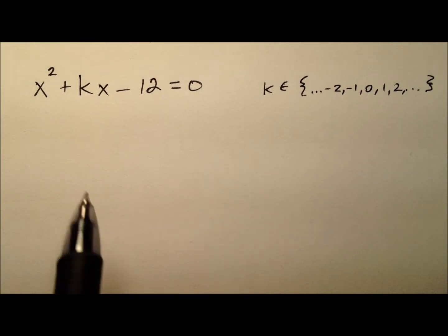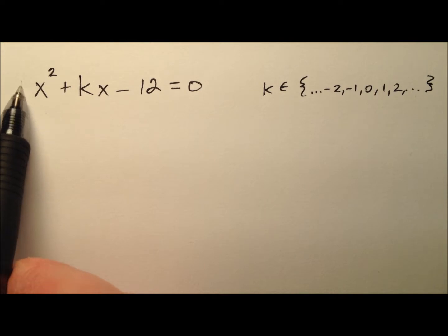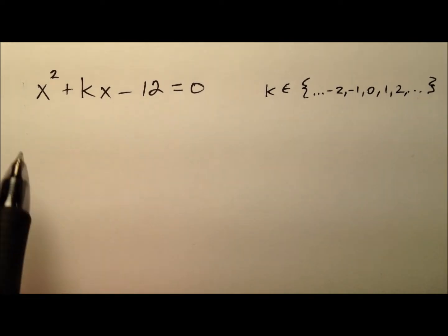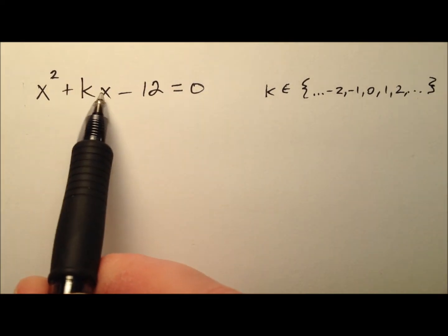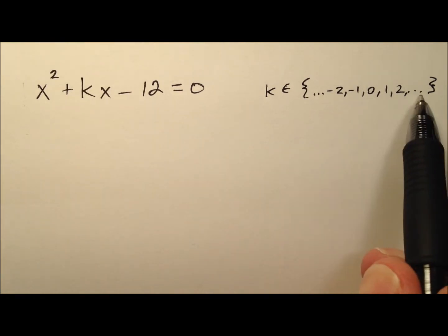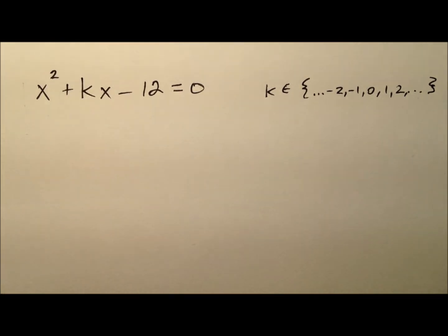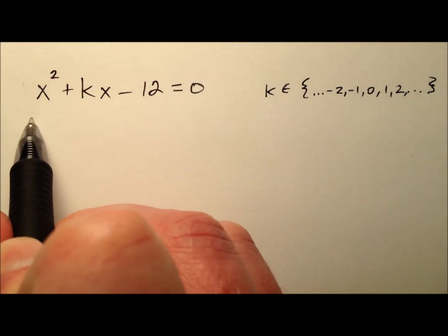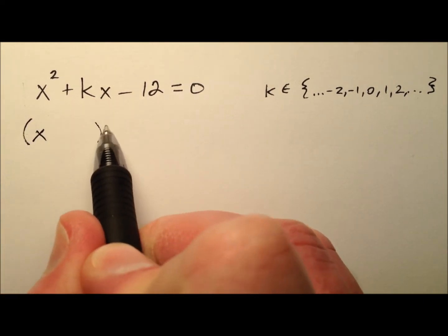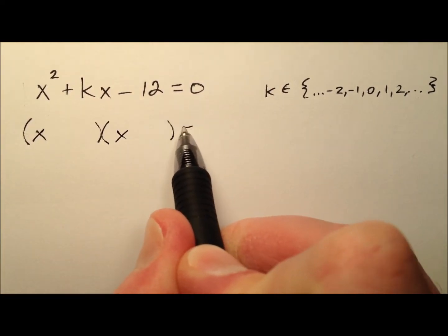Looking at this, we see the leading coefficient is 1, which is really nice. Since k will result in integer solutions, k itself has to be an integer, which means we can factor this nicely.